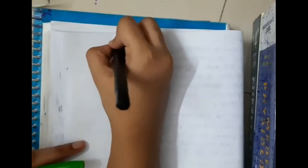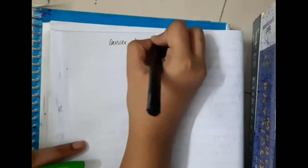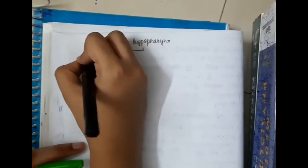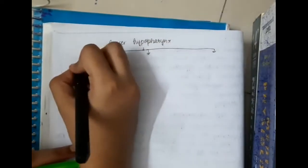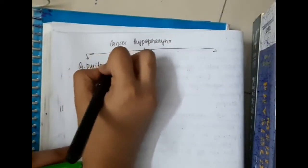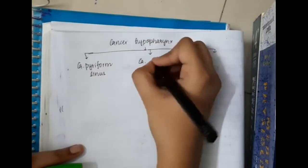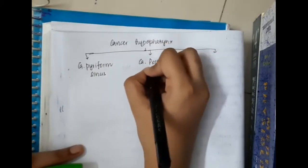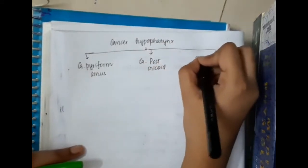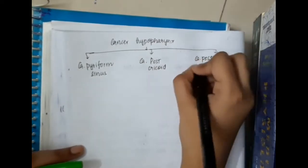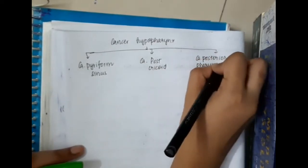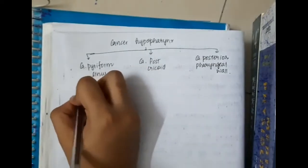Hello friends, let us now learn some important points about the cancer of hypopharynx. In the cancer of hypopharynx, it is caused by carcinoma pyriform sinus or it has three parts: carcinoma pyriform sinus, carcinoma post cricoid region, and carcinoma posterior pharyngeal wall.